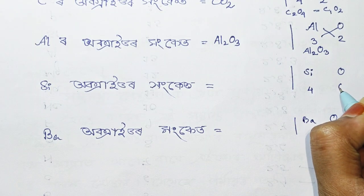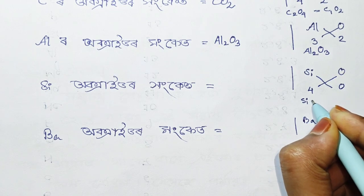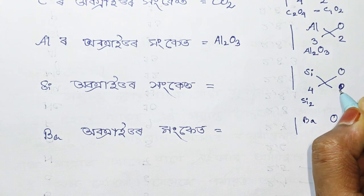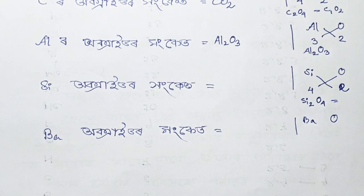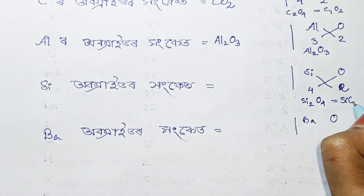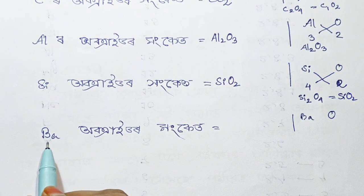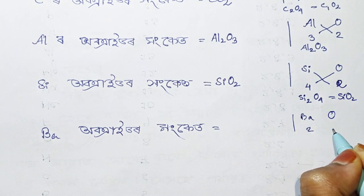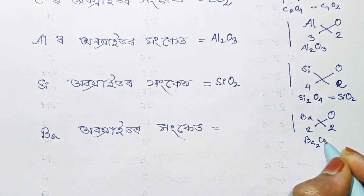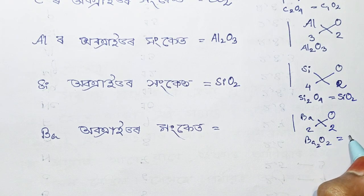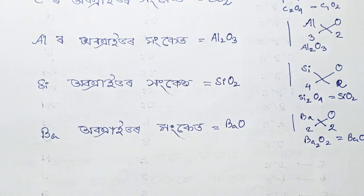Al₂O₃. Silicon is 4 and oxygen is 2. We cross the same way to get Si₂O₄, which simplifies to SiO₂ — silicon oxide. Barium is 2 and oxygen is 2. We cross the same way to get Ba₂O₂, which simplifies to BaO.